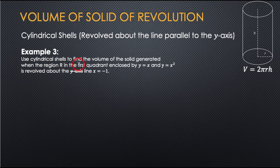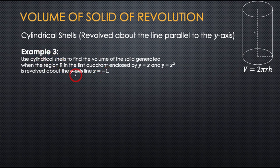Use cylindrical shells to find the volume of the solid generated when the region in the first quadrant enclosed by y = x and y = x² is revolved about the line x = −1. Remember: in Example 2 it revolved about the y-axis; now it revolves about the line x = −1, which is parallel to the y-axis.